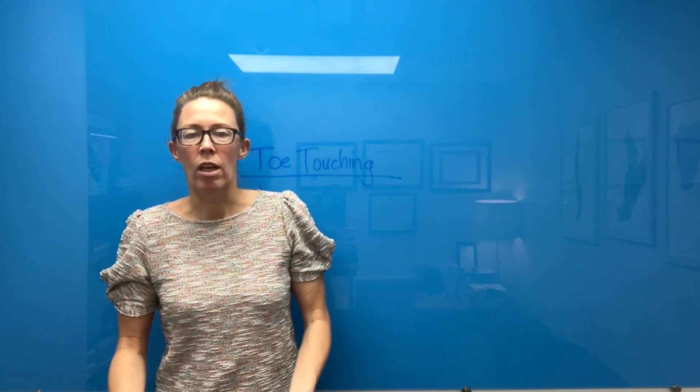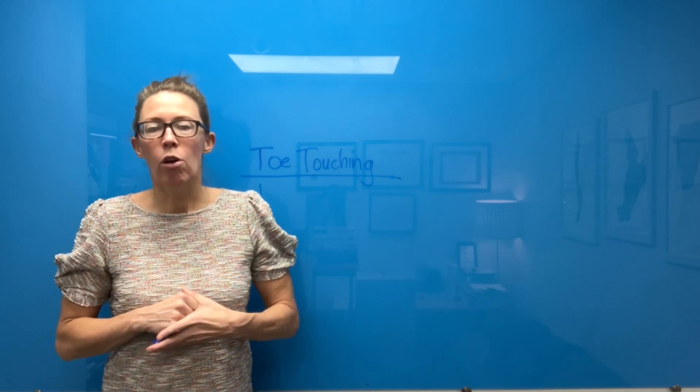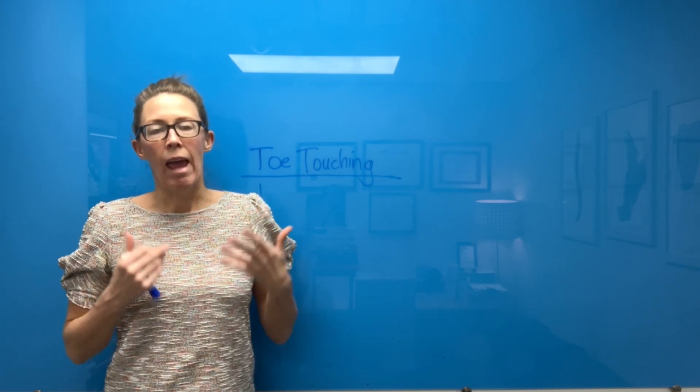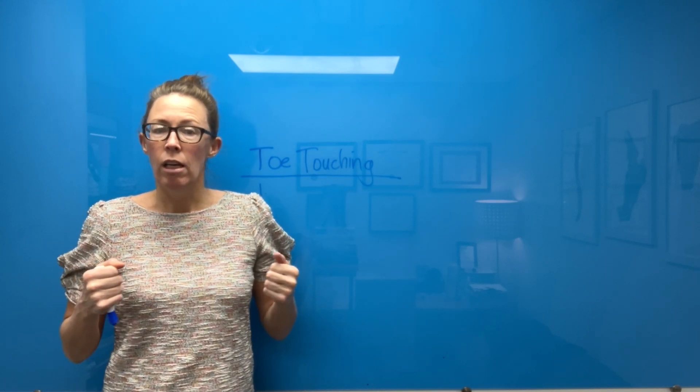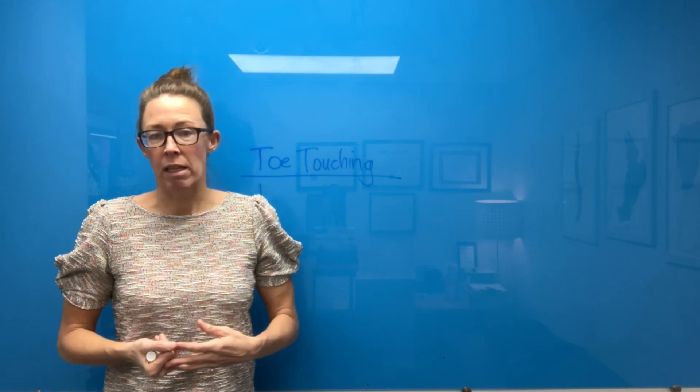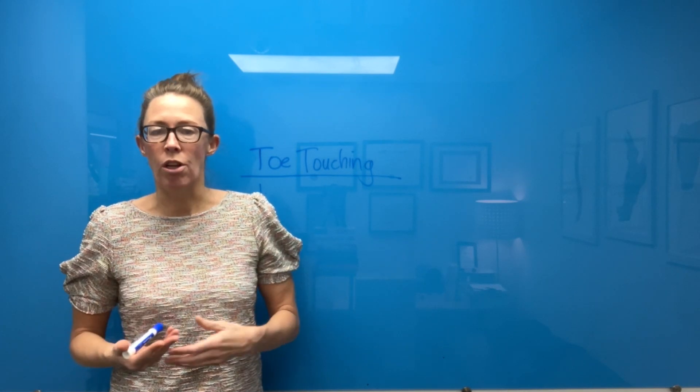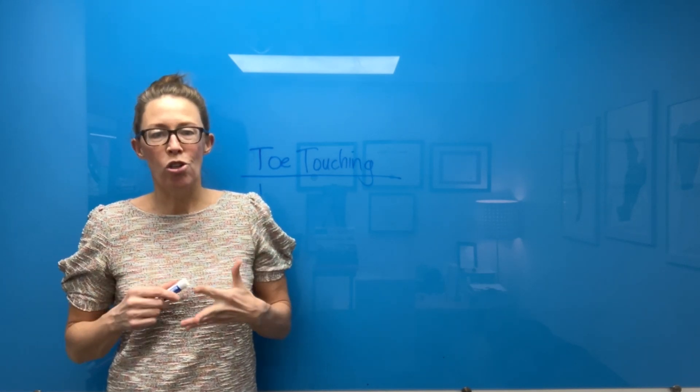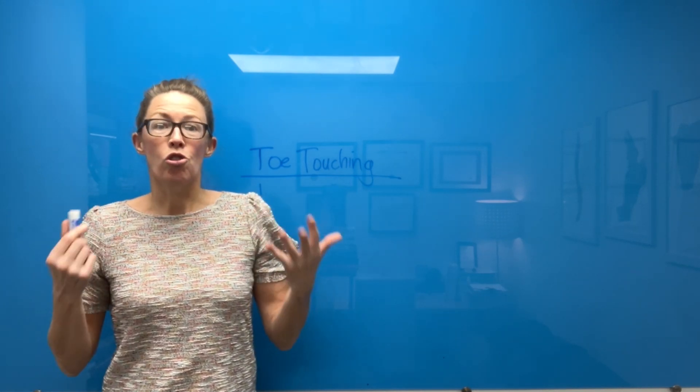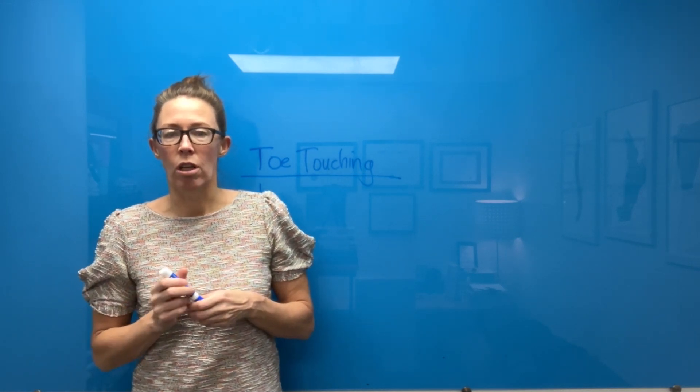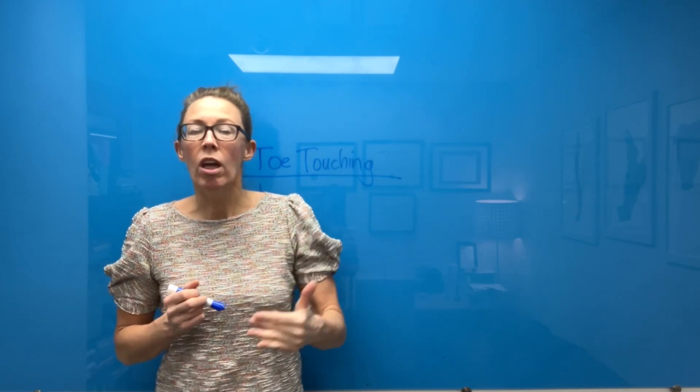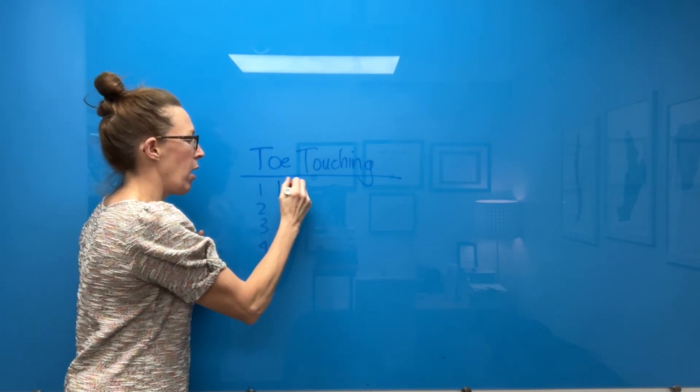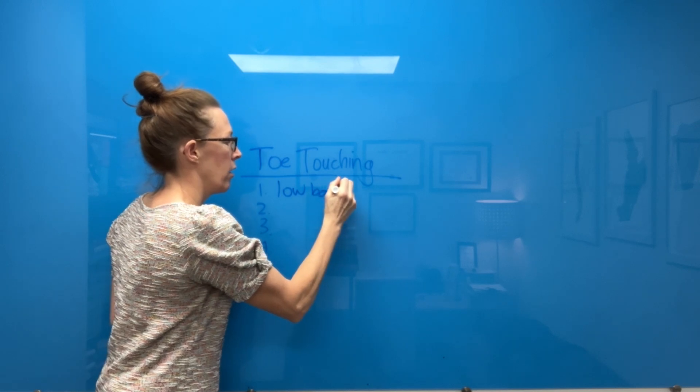So toe touching, most people incorrectly assume that it's really just stressing and assessing the hamstring muscles because they need to elongate in order to get that maximum hip flexion and toe touching. And that's true, but hamstrings are not the only structures or tissues that are stressed and assessed when we do toe touching. So when I think of what I'm looking for when I have somebody touch their toes,